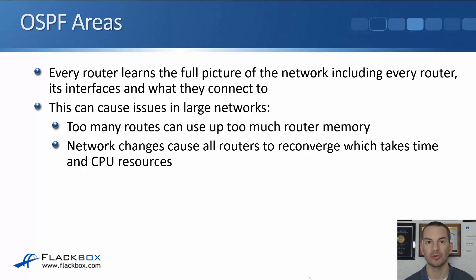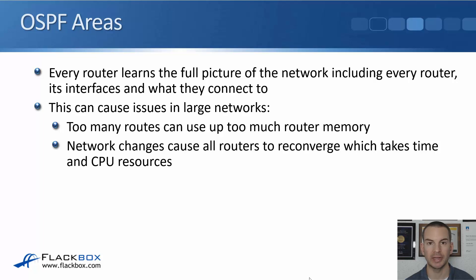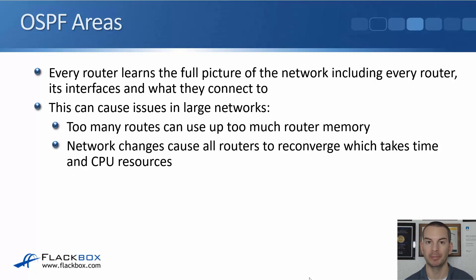Because every router knows about every link, there's going to be a lot of routes in its routing table and that can take up too much memory. Also, if there's a change in the network like a new link being added or a link going down, that causes all routers to reconverge, which takes time and CPU resources. The larger the network, the bigger the impact.